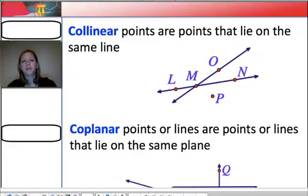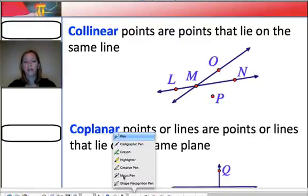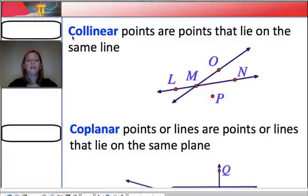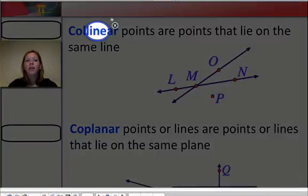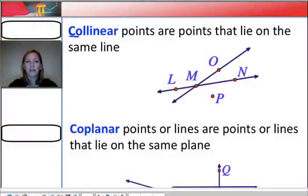All right. So now let's do a few more vocabulary words in geometry. The next one is collinear. So look real carefully at what words are inside the word collinear. See this word right here? Line. All right. So collinear means two things that are on the same line, or two points that are on the same line. So collinear points have to all be on the same line.